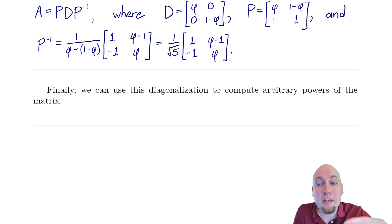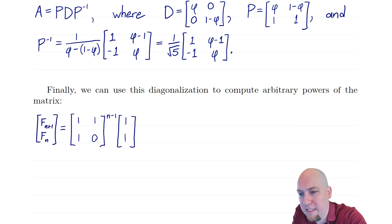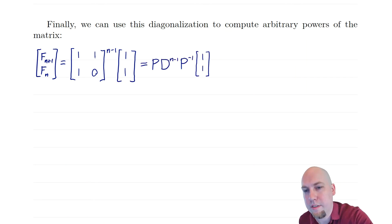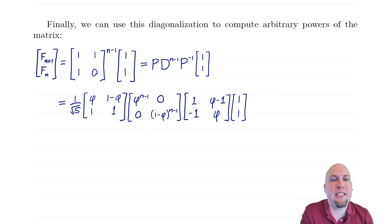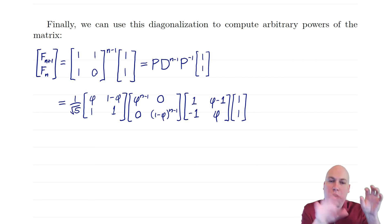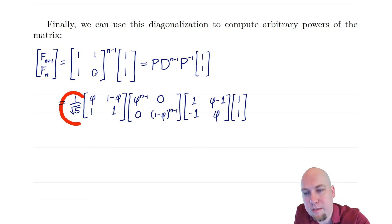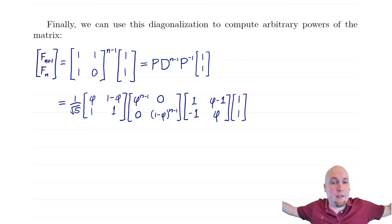Now that we know the diagonalization, we can compute arbitrary powers of the matrix: A^(n−1) = P · D^(n−1) · P-inverse. Because D is diagonal, we just raise the diagonal entries to the power (n−1), giving phi^(n−1) and (1−phi)^(n−1) on the diagonal. We then have P times that diagonal matrix times P-inverse — with the 1/√5 pulled all the way out in front — times the vector [1, 1].